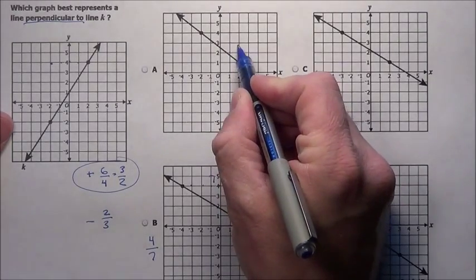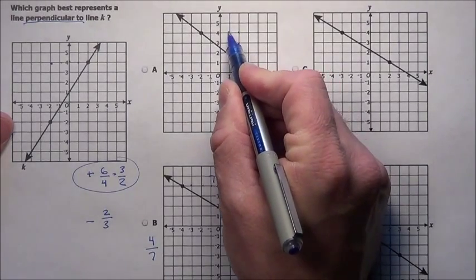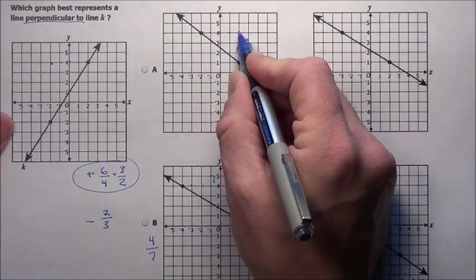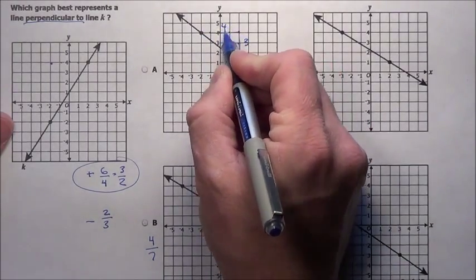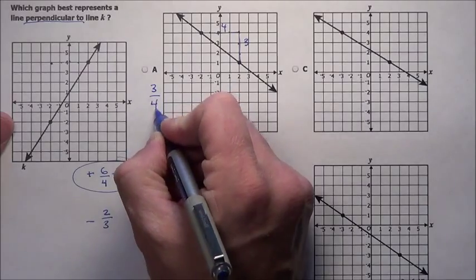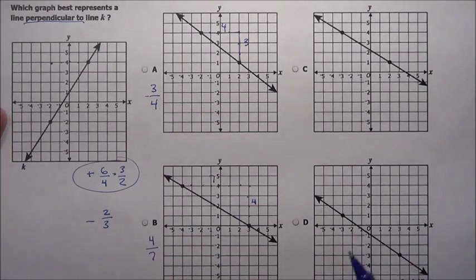Let's go to this guy, 1, 2, 3, 1, 2, 3, 4, so it rises 3, runs 4. That's a slope of negative 3 fourths, so we need negative 2 thirds. Not working.